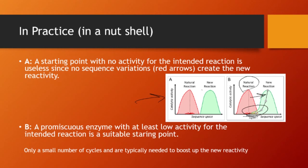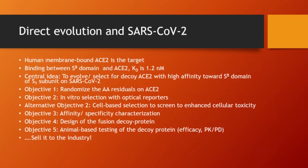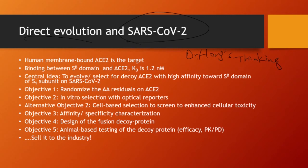These type of enzyme selections only require a very small number of cycles, so the time is not as long compared to other types of systematic screening. Now here comes one of the exciting parts of today — Dr. Hong's thinking. I'm trying to tie the directed evolution topic to SARS-CoV-2 and what we can do to combat this virus. Here are some facts: human membrane-bound ACE2 is the target we need to look at, and we know the binding between the SB domain and ACE2 has a very high affinity of 1.2 nanomolar KD.